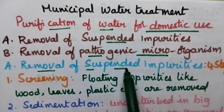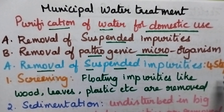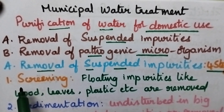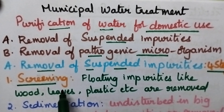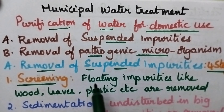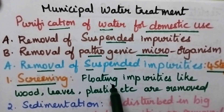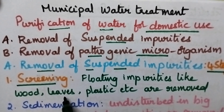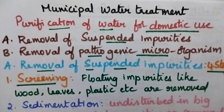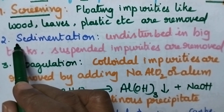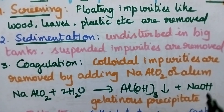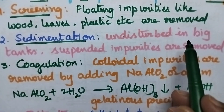Coming to the removal of suspended impurities from the water, it again involves four steps. The first step is screening — in this method, water is allowed to pass through screens containing big holes, so that floating impurities like wood, leaves, and plastic can be removed from the water. The second step involves sedimentation, in which water is allowed to stand undisturbed in big water tanks.